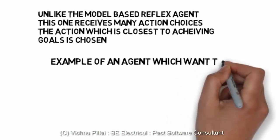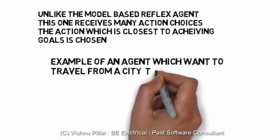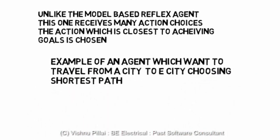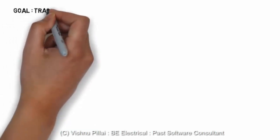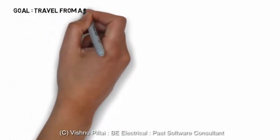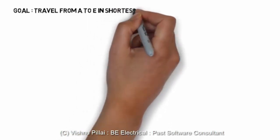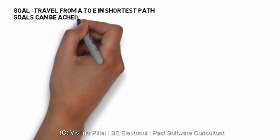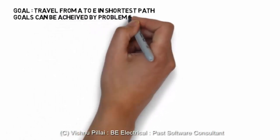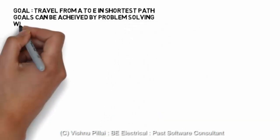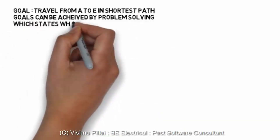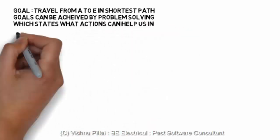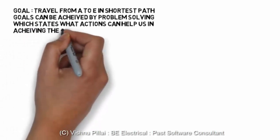Consider this example: suppose an agent wants to travel from city A to city E, and we have multiple route choices. The route map is a model of the environment which has been loaded into the agent's memory, and the goal is to travel from A to E in the shortest path. Such goals can be achieved by problem-solving algorithms.